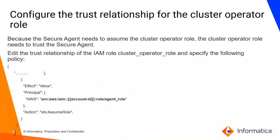Next, configure the trust relationship. The cluster operator role should trust the secure agent to allow it to be assumed. In the previous step, we gave the Assume Role Policy to the secure agent so it can assume the cluster operator role. Now, the cluster operator role also needs to trust the secure agent. In this step, we will edit the trust relationship of the IAM role for the cluster operator role and specify the ARN of the agent role. As shown in this section in AWS, this ARN will be the ARN of your secure agent role which you created in the second step.